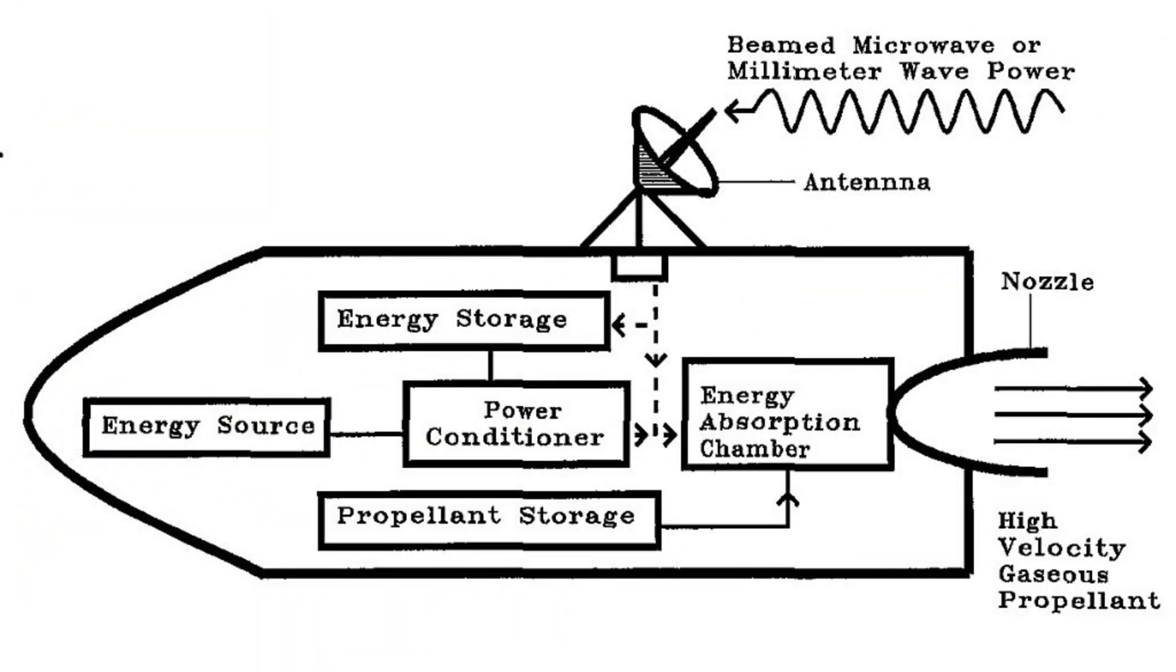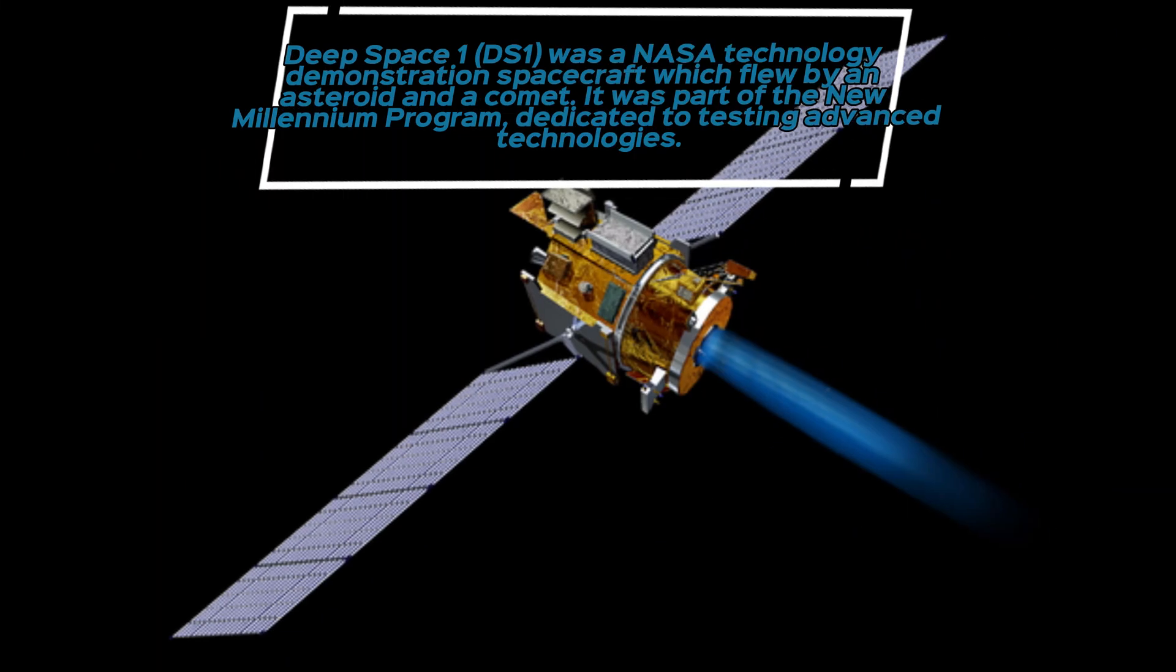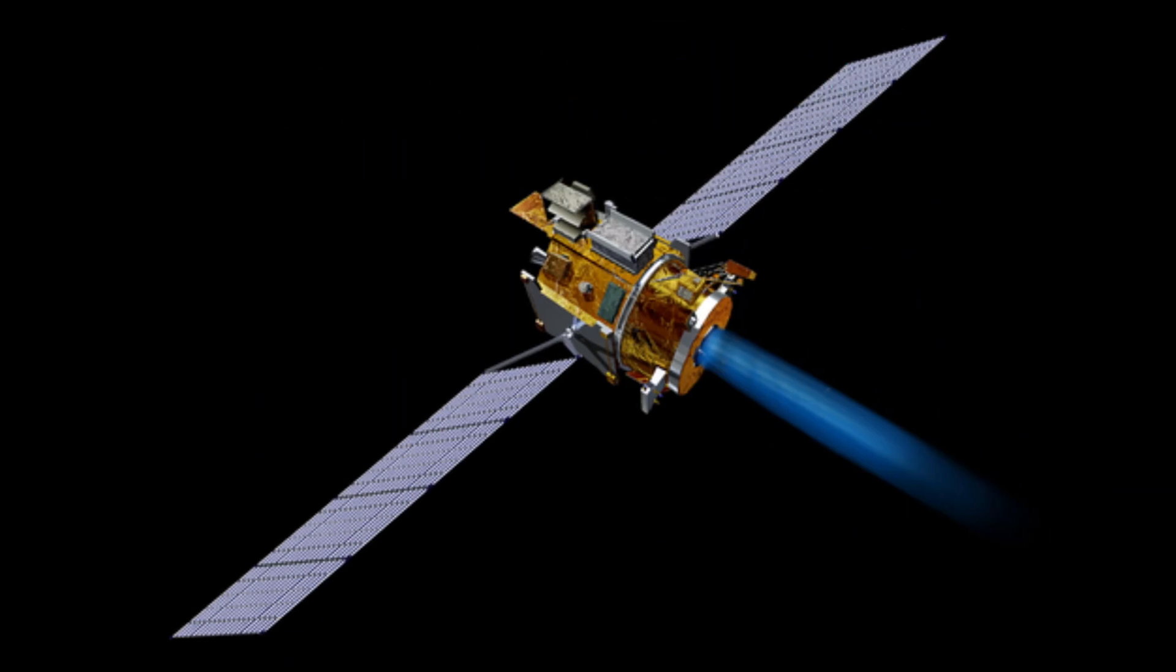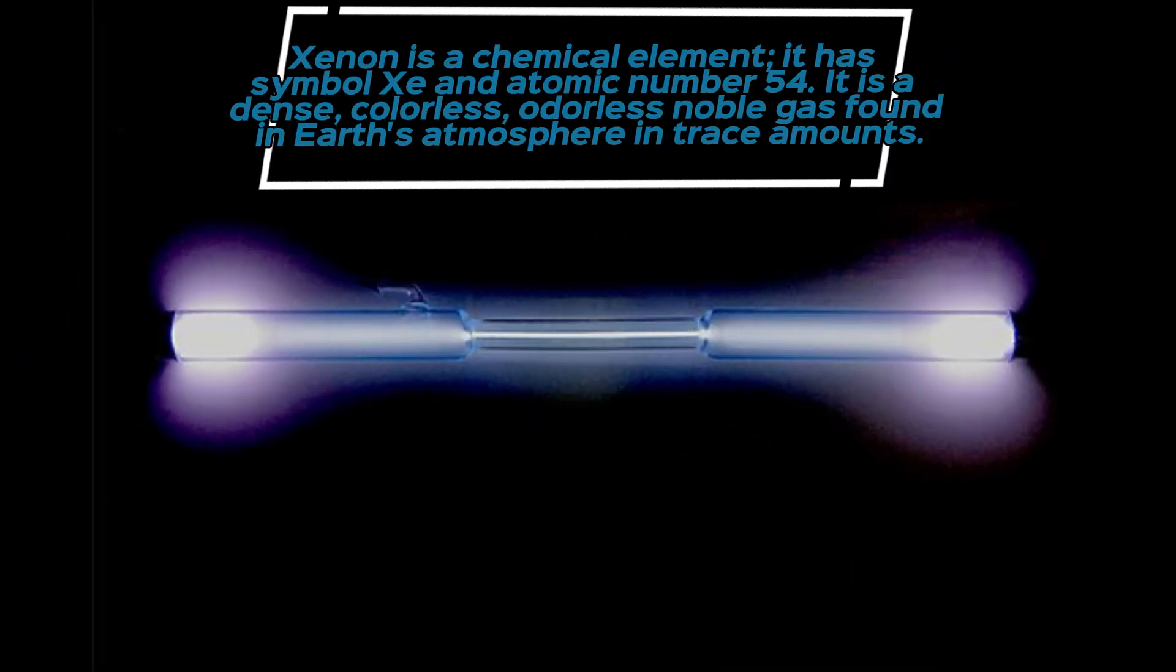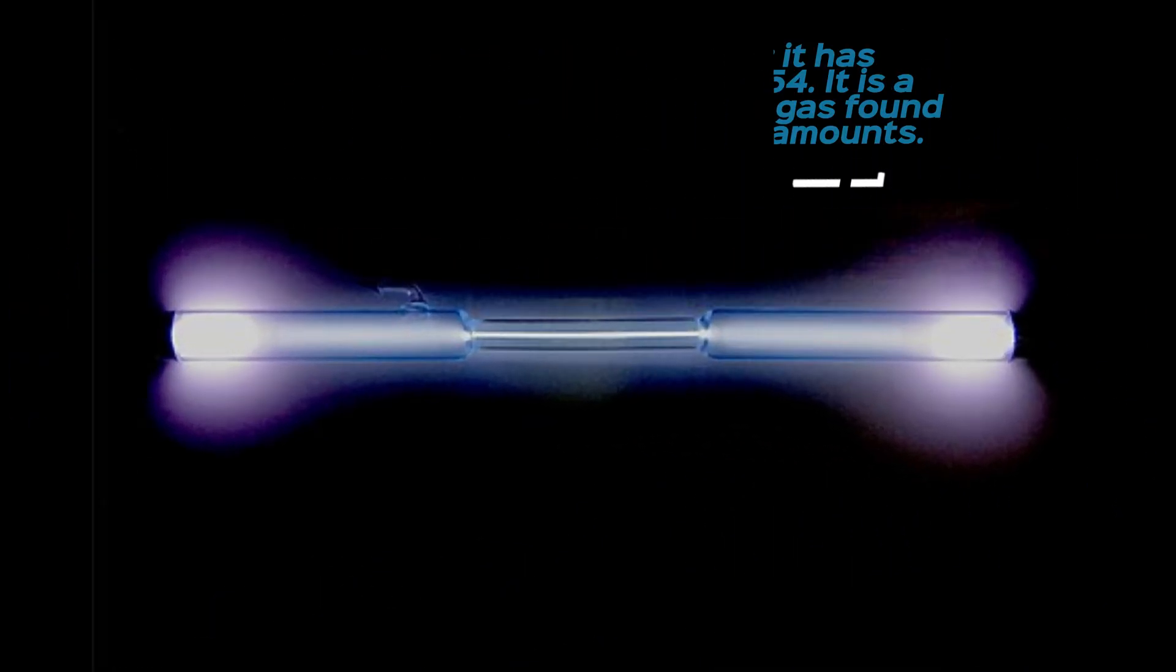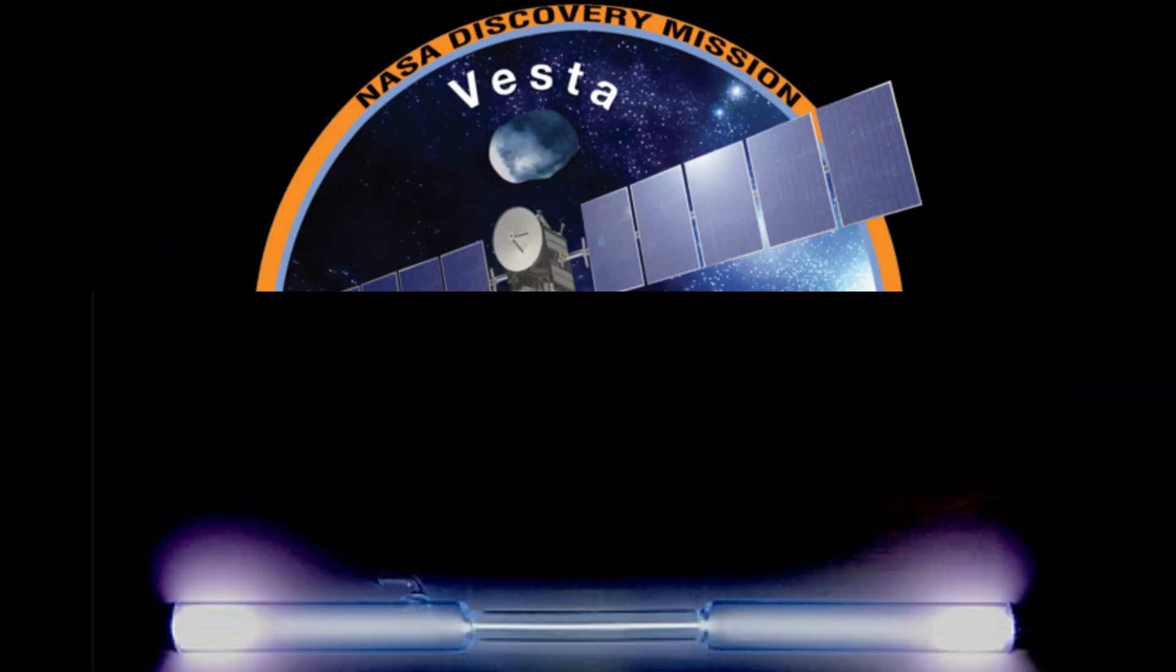The Deep Space One spacecraft, powered by an ion thruster, changed velocity by 4.3 km per second while consuming less than 74 kg of xenon.